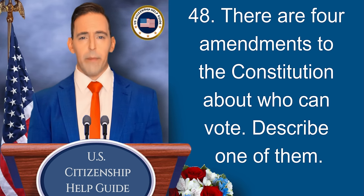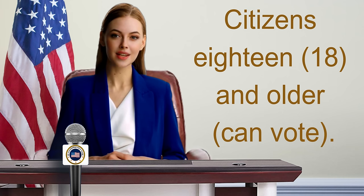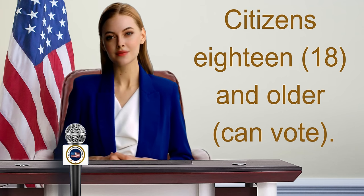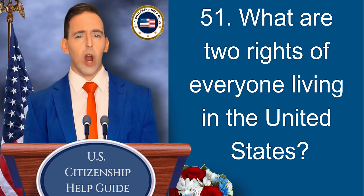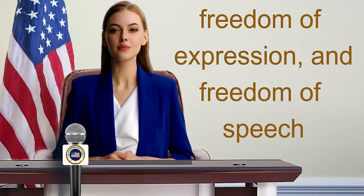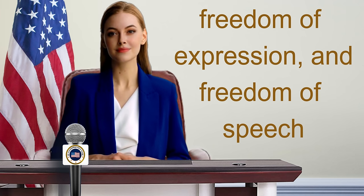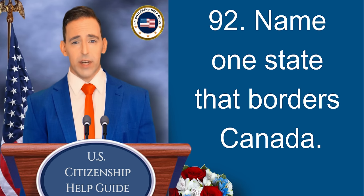There are four amendments to the Constitution about who can vote. Describe one of them. Citizens 18 and older can vote. What are two rights of everyone living in the United States? Freedom of expression and freedom of speech. Name one state that borders Canada. Alaska.